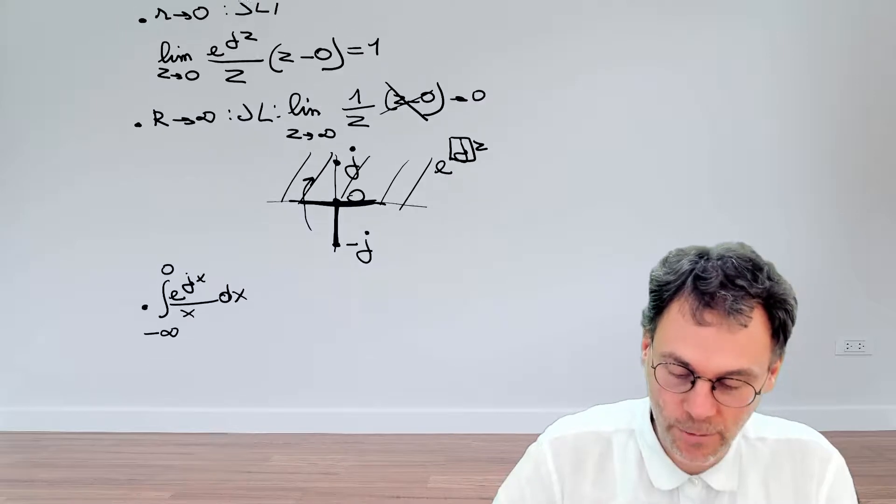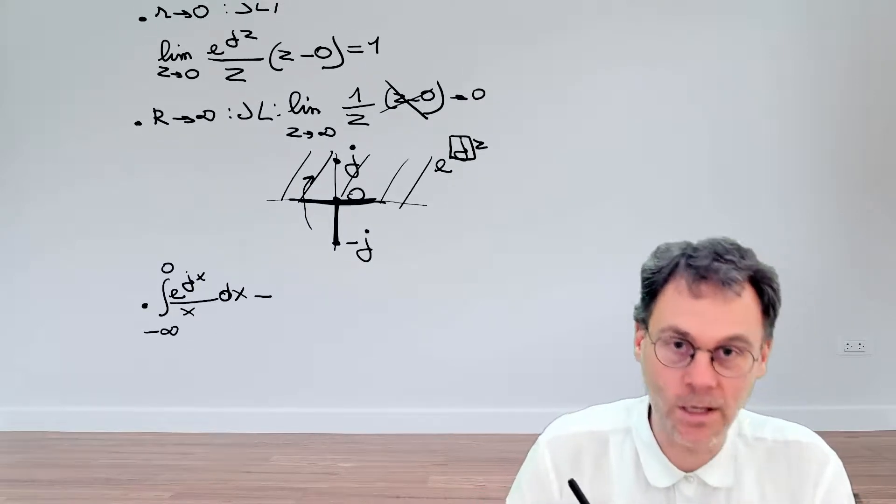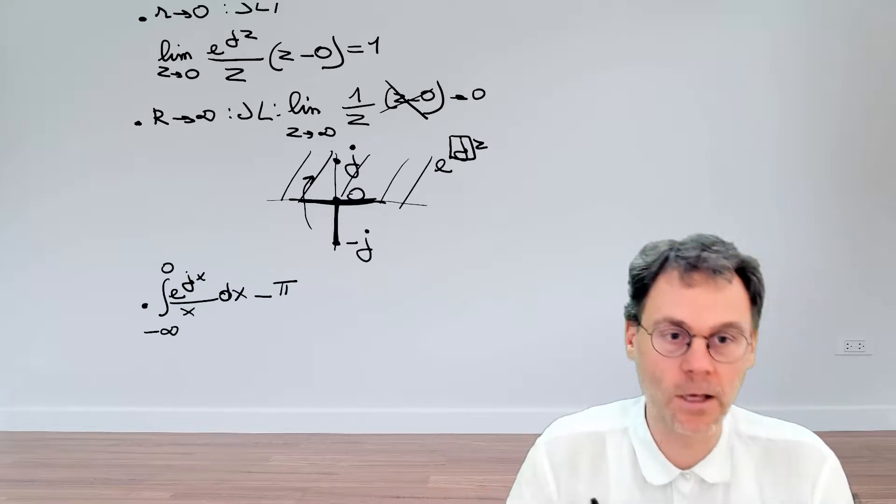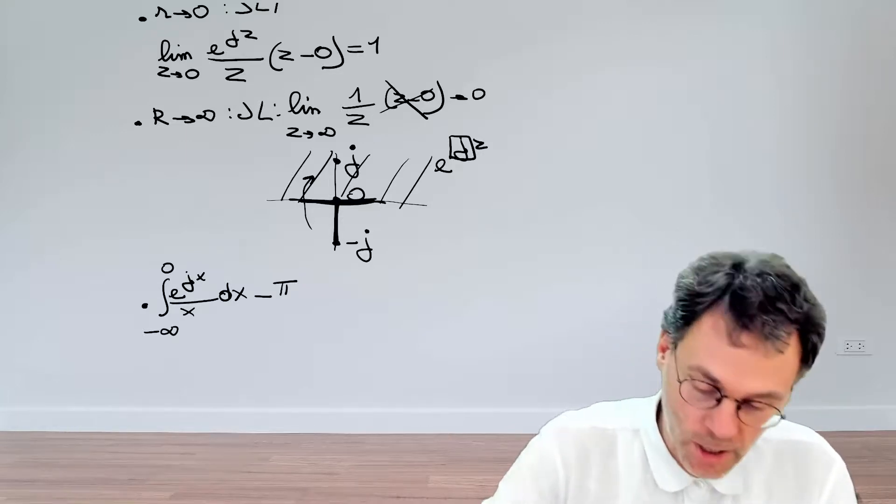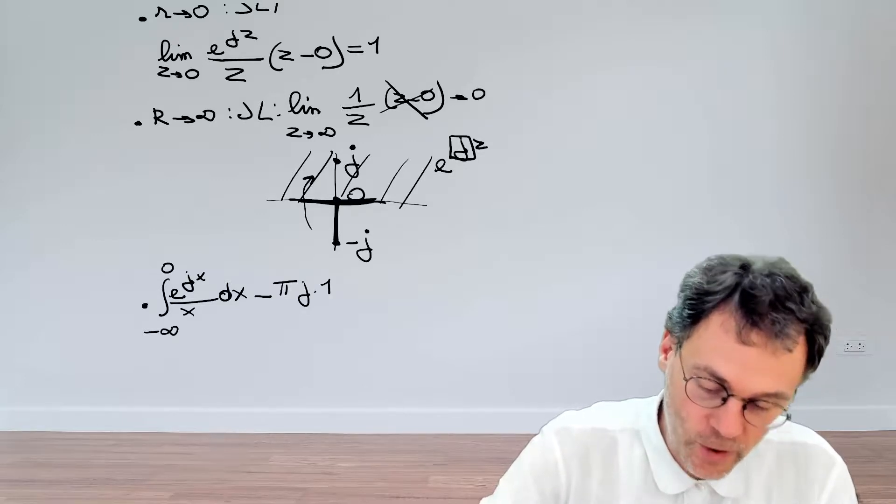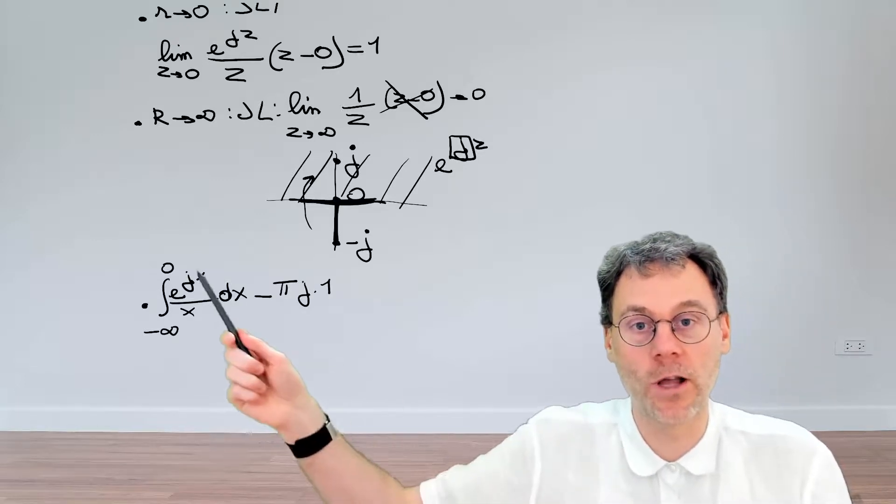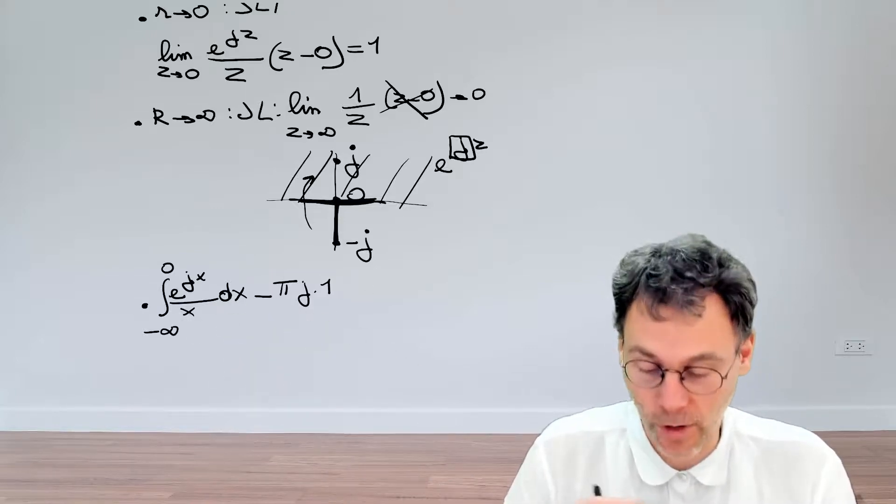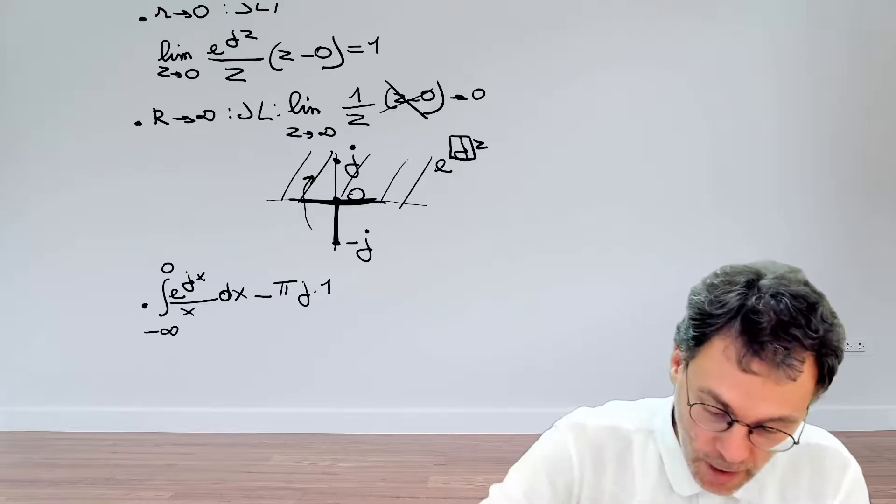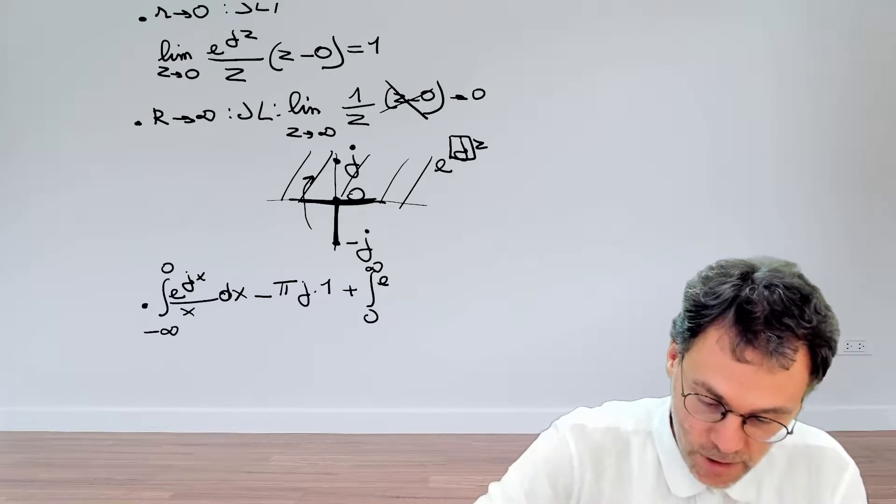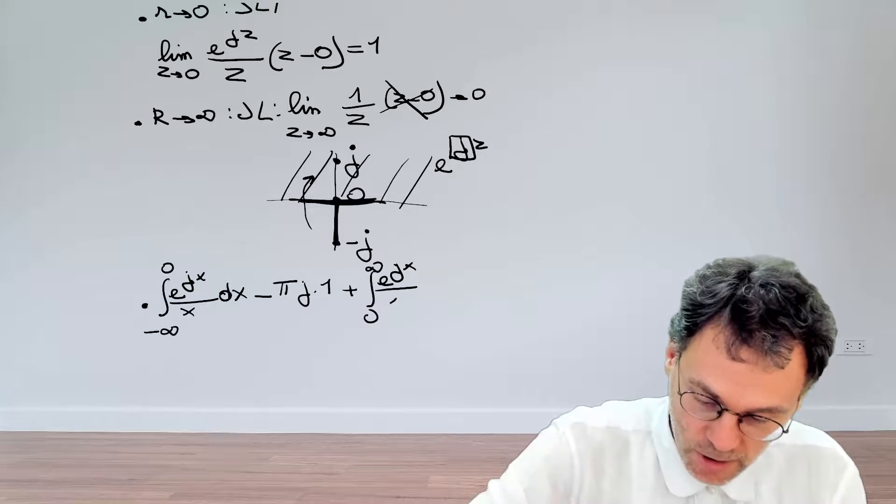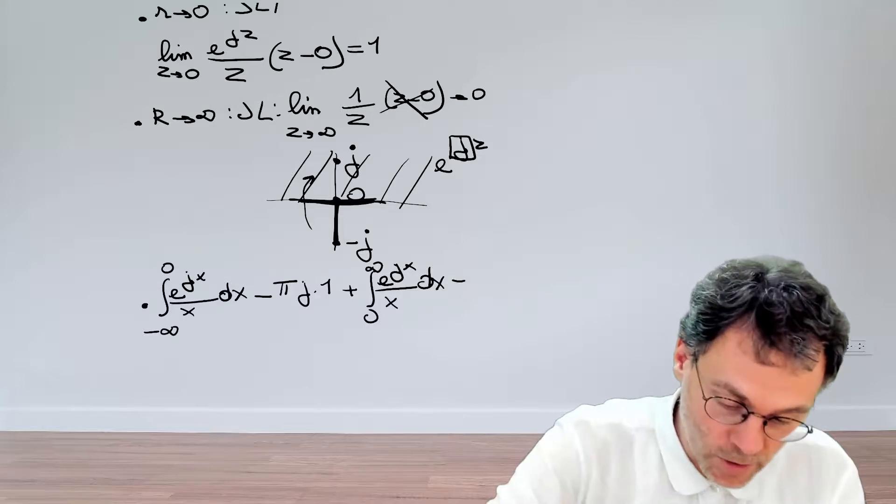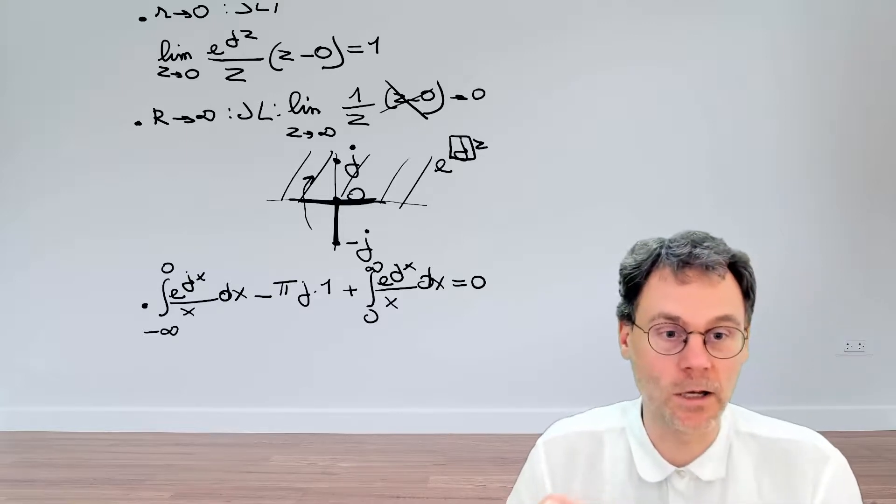The small limit theorem tells us that we need to have a look at the angle of that circular segment. So that's pi in this case. And then J and then that limit value we calculated. Of course, we should also not forget this minus sign from moving in the clockwise direction as opposed to the counterclockwise direction. And then finally integral from 0 to infinity exponential JX over X DX, which still is 0 because there's no singularities inside the contour.